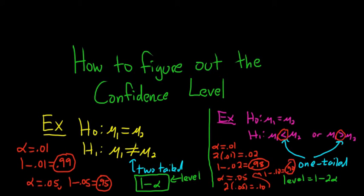So to summarize: if it's two-tailed — if you have a 'not equal to' — you just do 1 minus alpha, really simple. If it's one-tailed, you first multiply alpha by two and then do 1 minus that result. Sometimes you're just doing a hypothesis test and it'll say at the end find a confidence interval and it won't give you the level — so hopefully now you can do it.